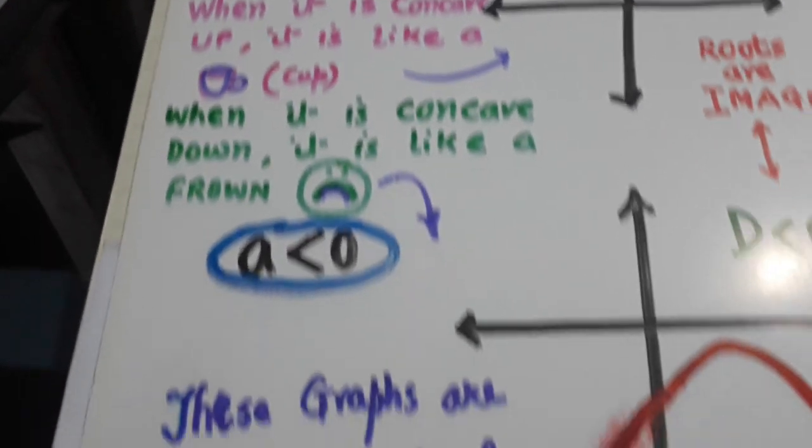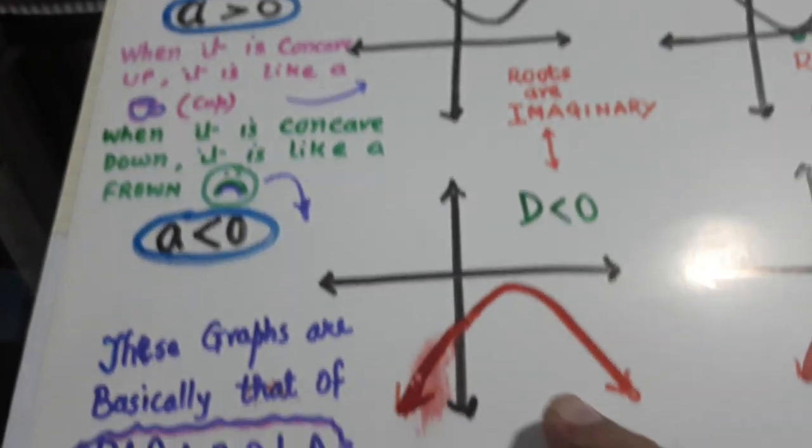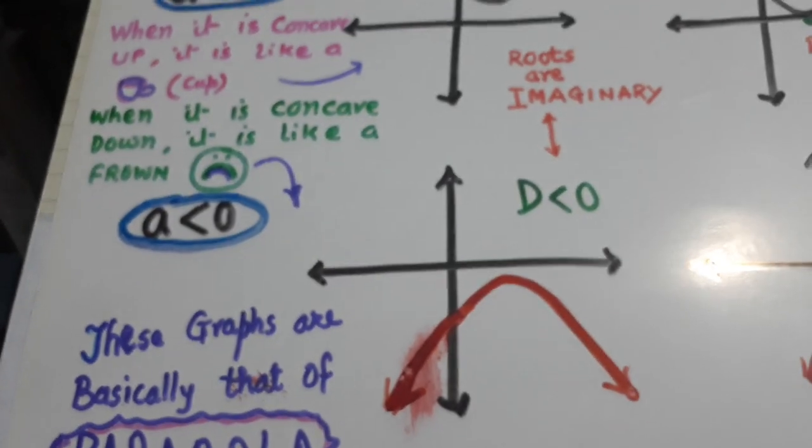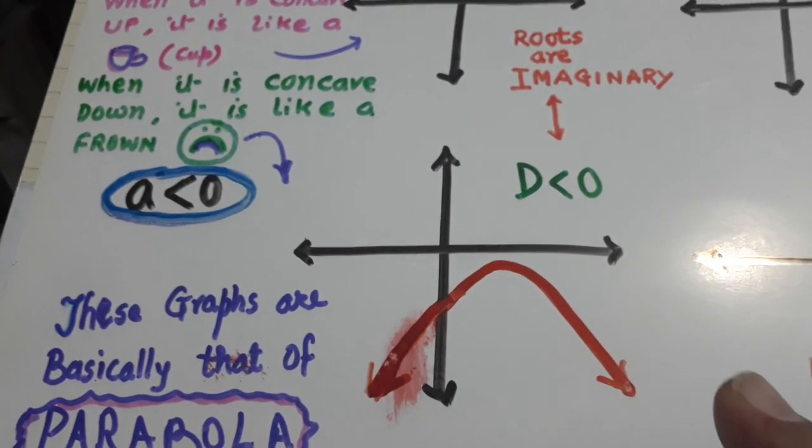Similarly, here a is less than 0. The graph is tilted. So, in this case, D is less than 0.